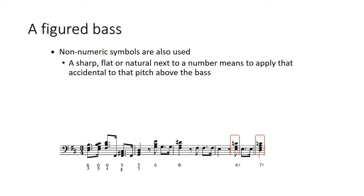So here I have a six natural. So that means the sixth above the bass note should be a C natural. And then of course there's an implied third as well. It's a first inversion. In this case, it ends up being a C major triad.